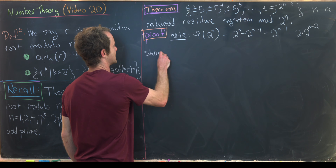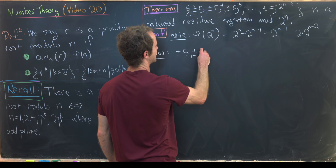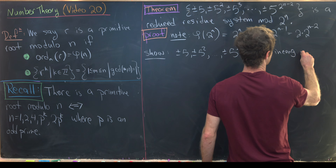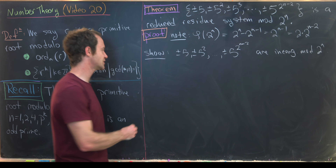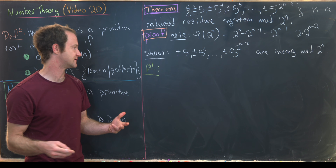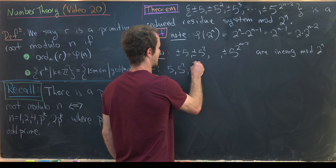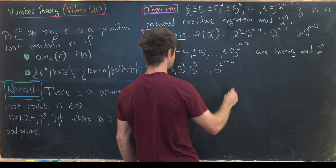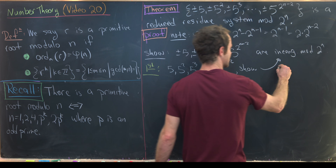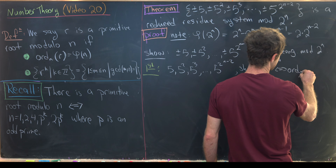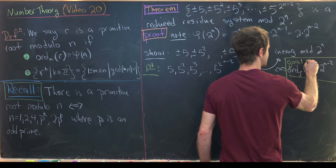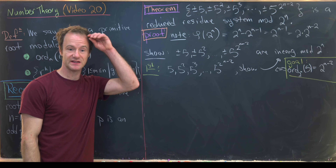What remains is to show all elements are incongruent mod 2^n. We start by showing the positive powers of 5 — namely 5, 5^2, 5^3, …, 5^(2^(n−2)) — are incongruent mod 2^n. This is equivalent to showing the order of 5 mod 2^n equals 2^(n−2).